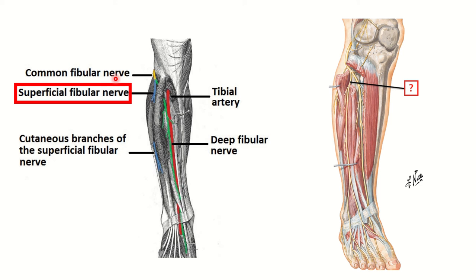The deep fibular nerve also arises from the common fibular nerve along with the superficial fibular nerve, and it runs along the anterior surface of the leg with the tibial artery. The superficial peroneal nerve runs along the lateral side of the leg, while the deep fibular nerve runs downwards along the anterior part of the leg. The deep peroneal nerve runs to the lower foot and supplies different muscles there.